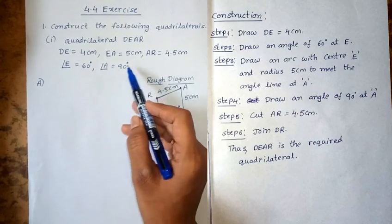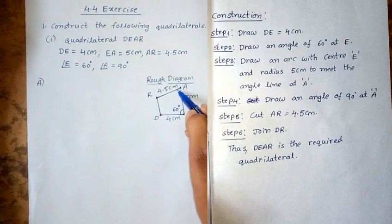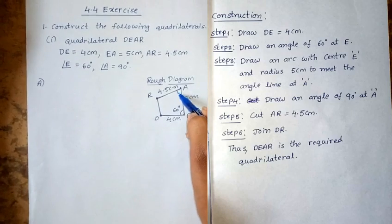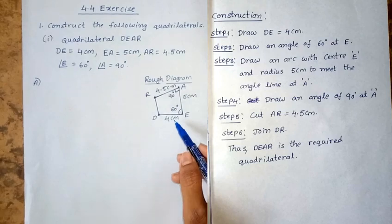Next, angle A equal to 90 degrees. This is angle A, 90 degrees. Now we have the rough diagram, so let us proceed with the original quadrilateral construction.